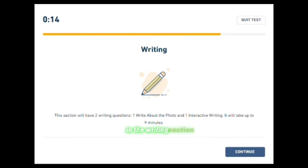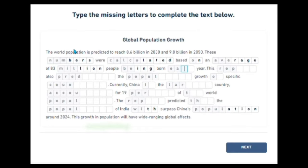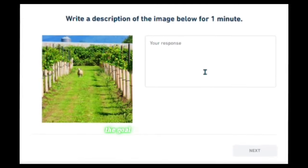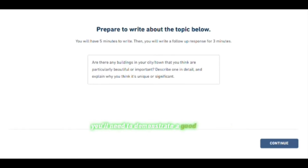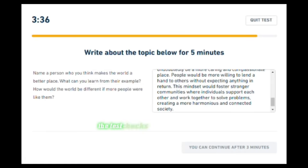In the writing section, you will need to respond to different prompts by writing your answers. This could involve writing a short essay, completing sentences, or giving your opinion on a topic. The goal is to evaluate how clearly and effectively you can express your thoughts in written English. You'll need to demonstrate a good command of grammar, spelling, sentence structure, and use appropriate vocabulary. The test checks not only your language skills but also how well you can organize and communicate your ideas logically.